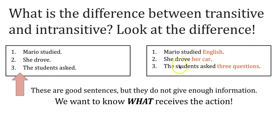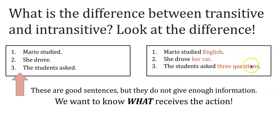For sentence three: 'The students asked three questions' — 'three questions' were asked, so 'questions' is the direct object. Here you can see the difference between sentences that do not have direct objects and sentences that do have direct objects.